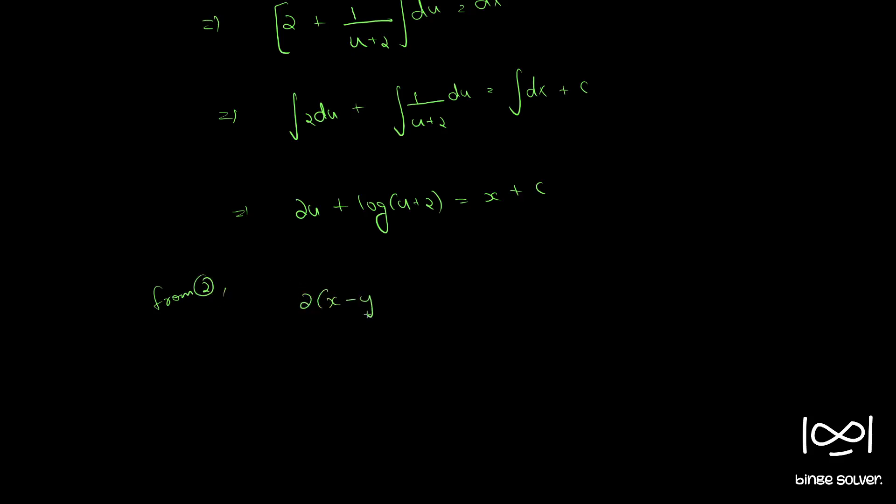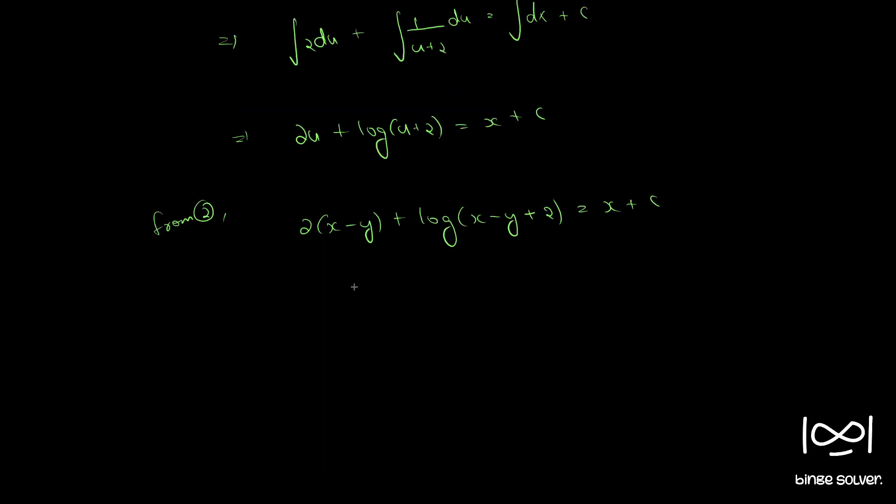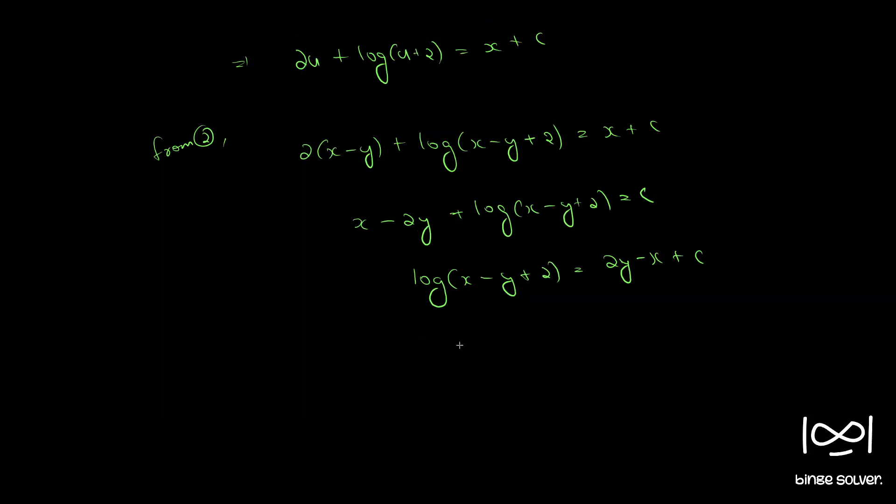So from equation 2: 2(x - y) + log(x - y + 2) = x + c, or we can write x - 2y + log(x - y + 2) = c. This is also equal to log(x - y + 2) = 2y - x + c.